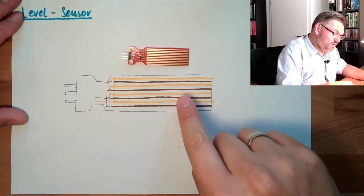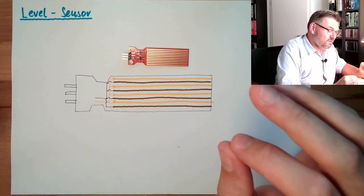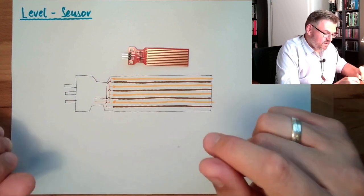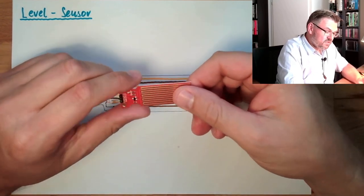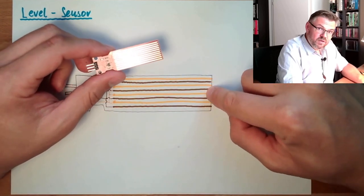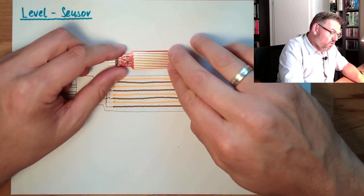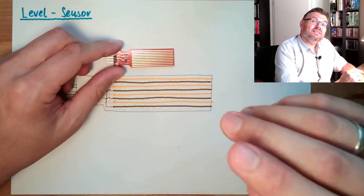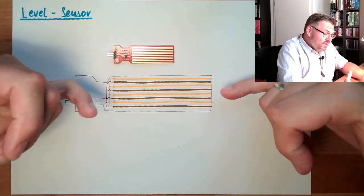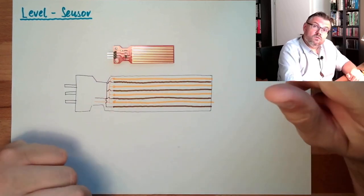However, if this surface now is getting touched by something which is a little bit conductive, for instance a finger, if we touch this, then we make a connection between those two sides. And the more of the surface is touching this conductive material, the better those two sides are interconnected to each other.